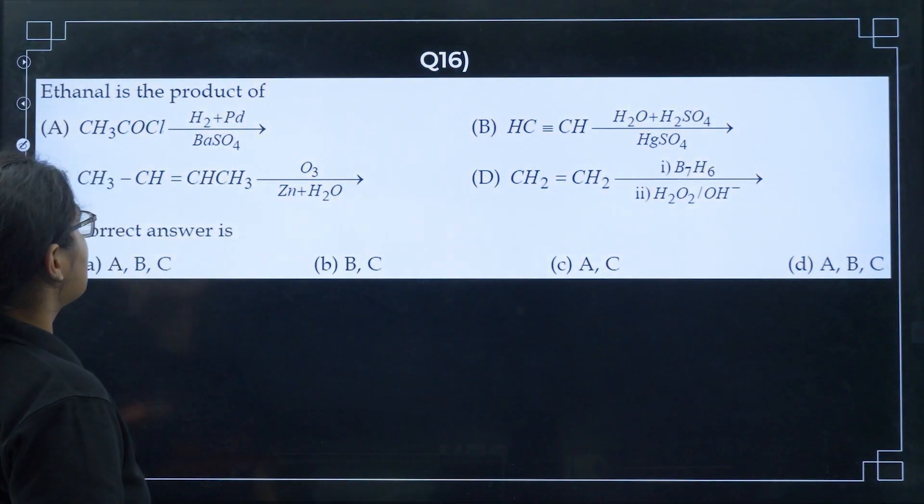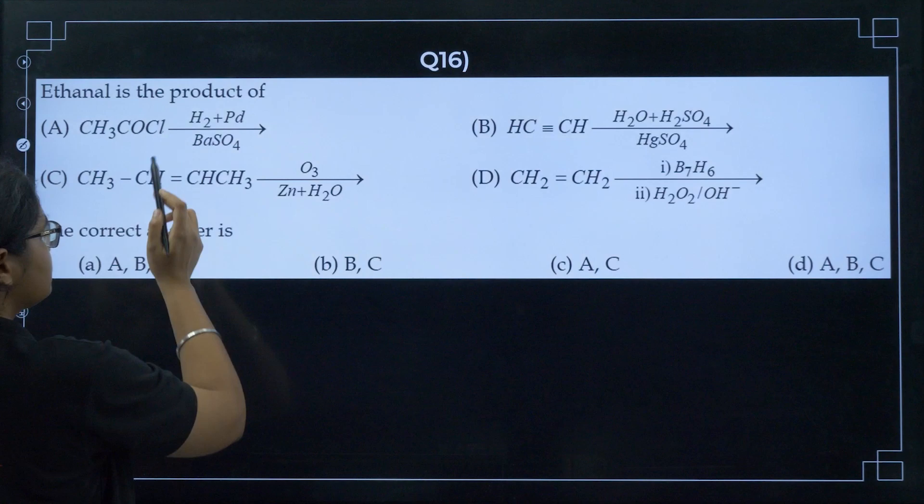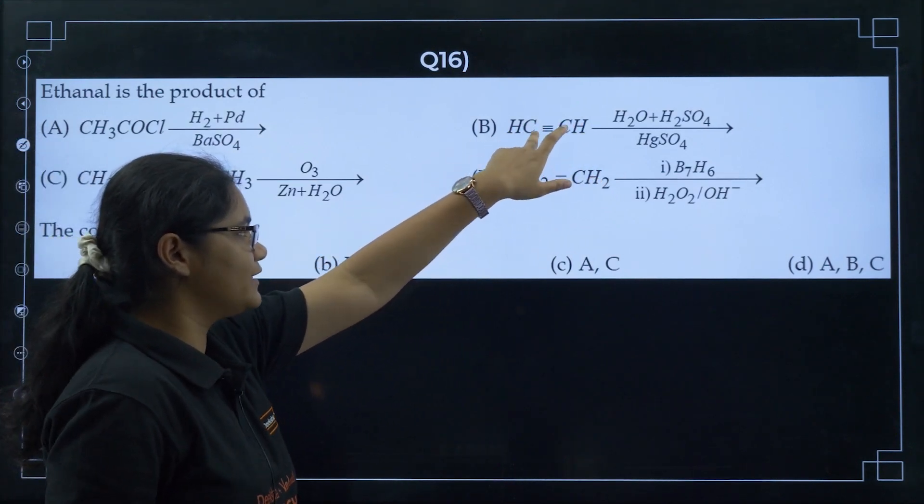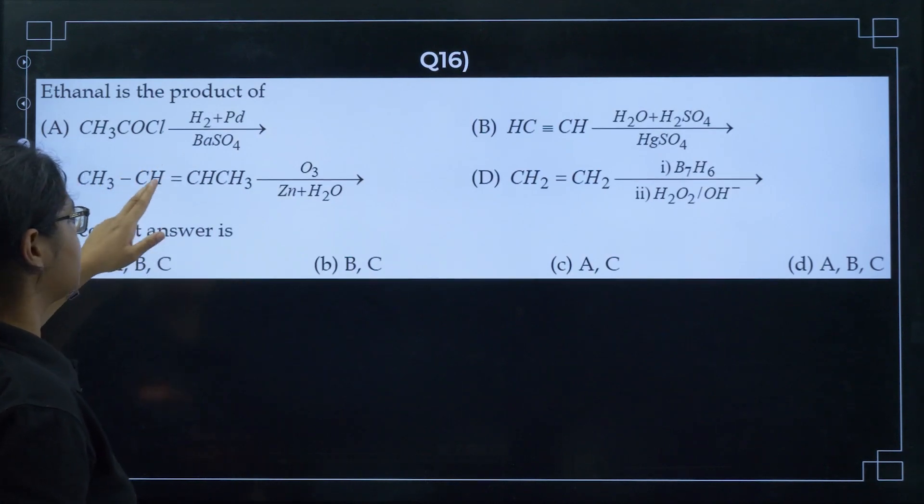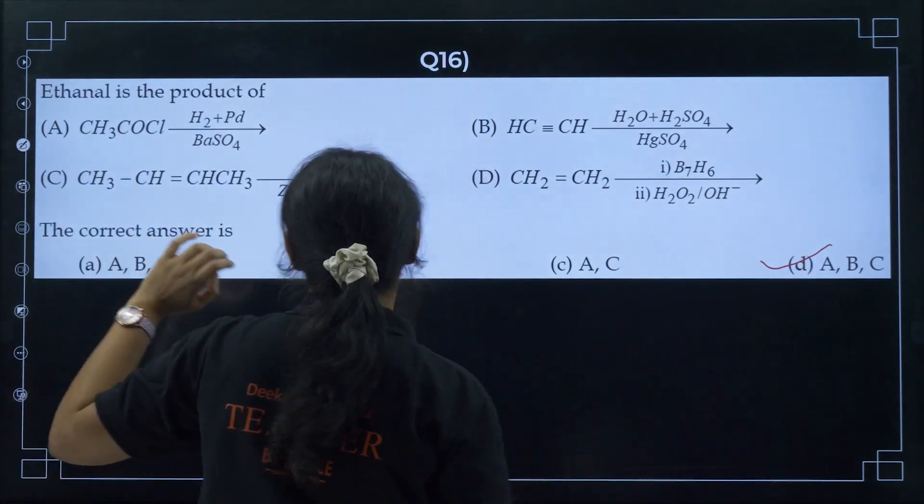Next question: CH3CHO and C6H5CH2CHO can be distinguished chemically by. If you see, I have this CH3CO group present which can be identified by iodoform test. Option B. Next, ethanol is the product of. This is Rosenmund reduction - I can definitely get ethanol. From here also with Hg and H2SO4, you can get ethanol. And here if I just break this, I will get two molecules of ethanol. A, B and C, all of them. Option D.